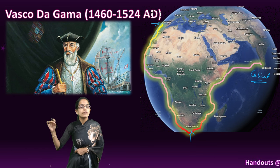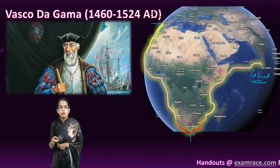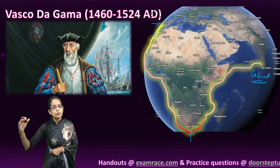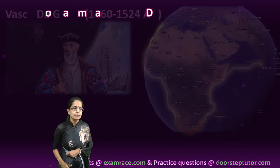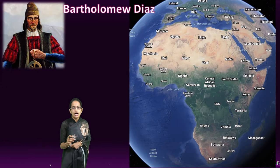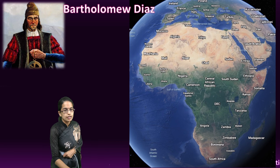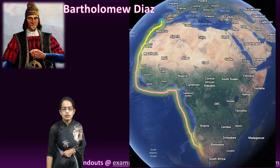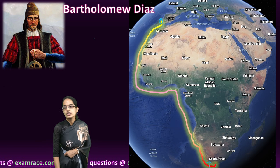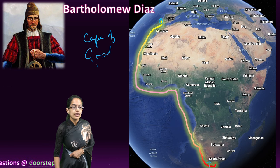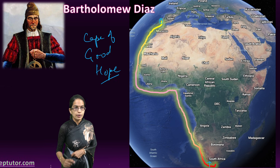Vasco da Gama discovered the route to India, starting from Portugal through the Cape of Good Hope, landing at Calicut. The next is Bartholomew Diaz — again a Portuguese sailor — who started from Portugal and moved to South Africa at the Cape of Good Hope. He discovered the Cape of Good Hope, which became a major part of Vasco da Gama's later journey.